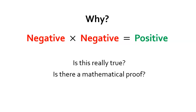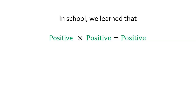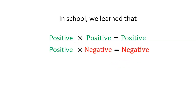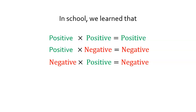Following these rules, we have positive times positive equals positive. I am convinced that this is true — no problem about it. Positive times negative equals negative. Again, I'm convinced that this is true. If I multiply 2 times what I borrowed, my debt will double. Negative times positive equals negative. Again, I'm convinced that this is true because multiplication is interchangeable.